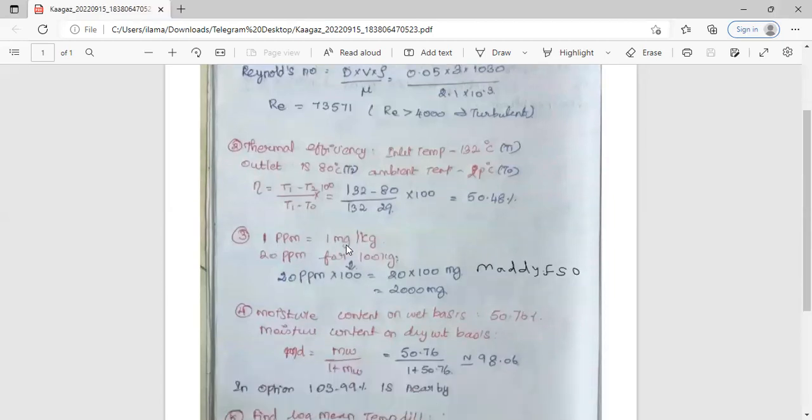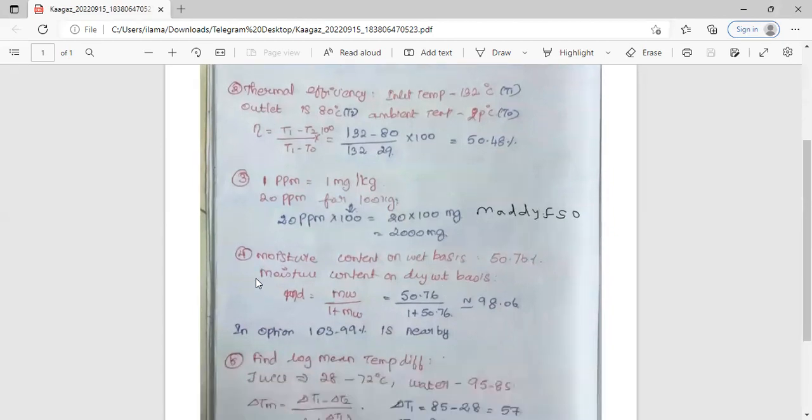One ppm means one mg per kg. What is the value of 20 ppm in terms of mg for 100 kg? It's 20 times 100, which is 2000 mg.